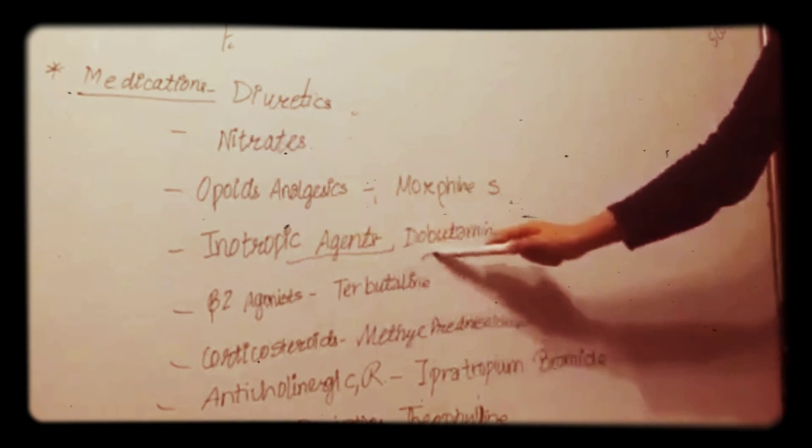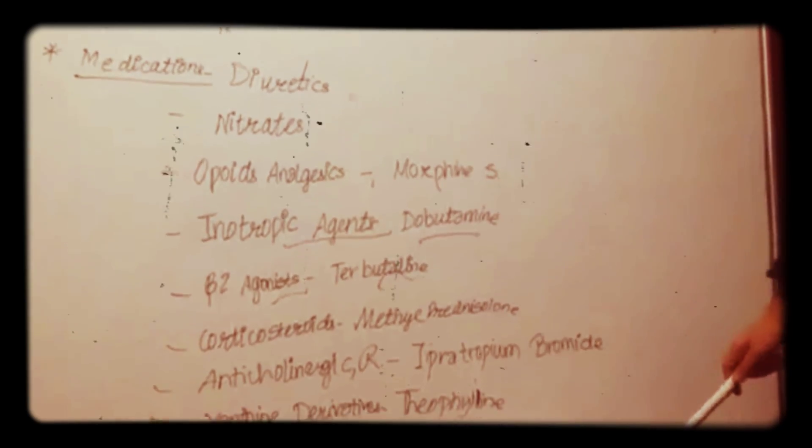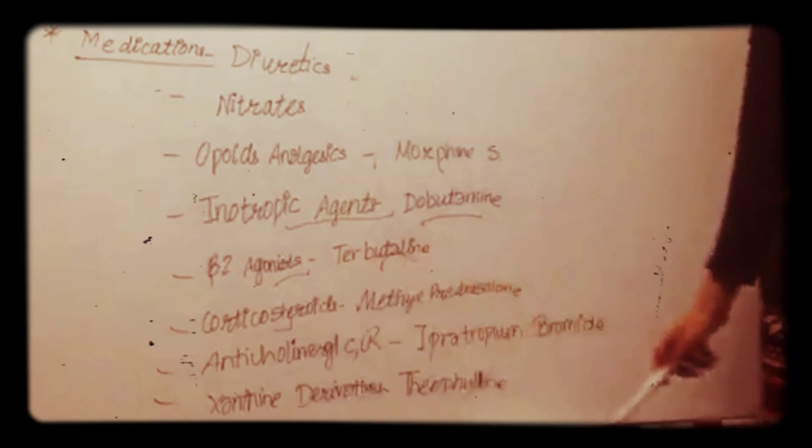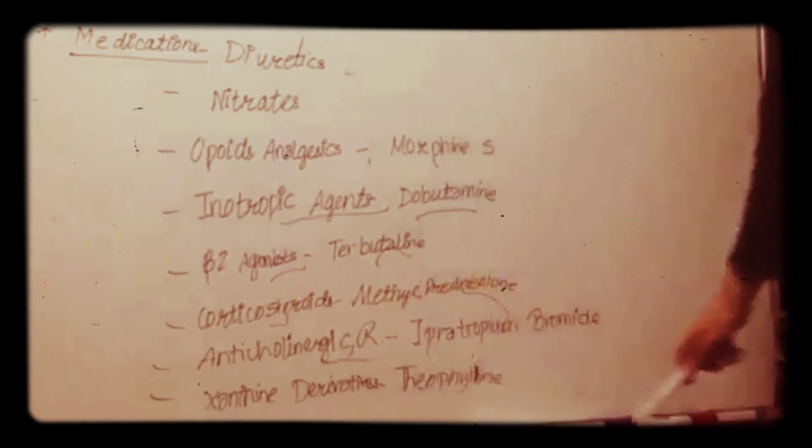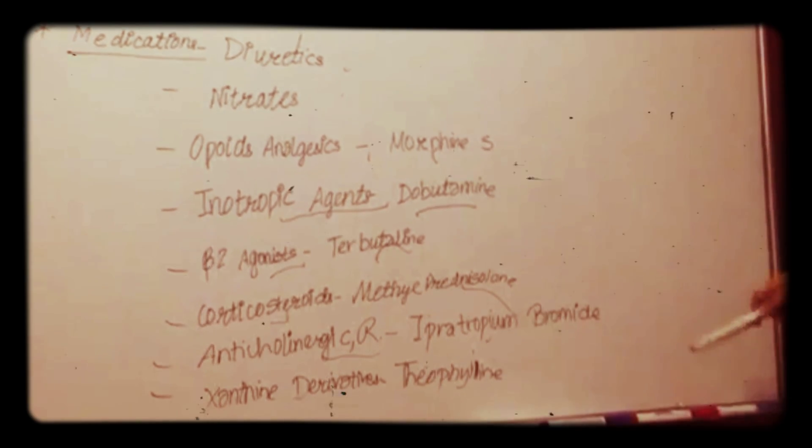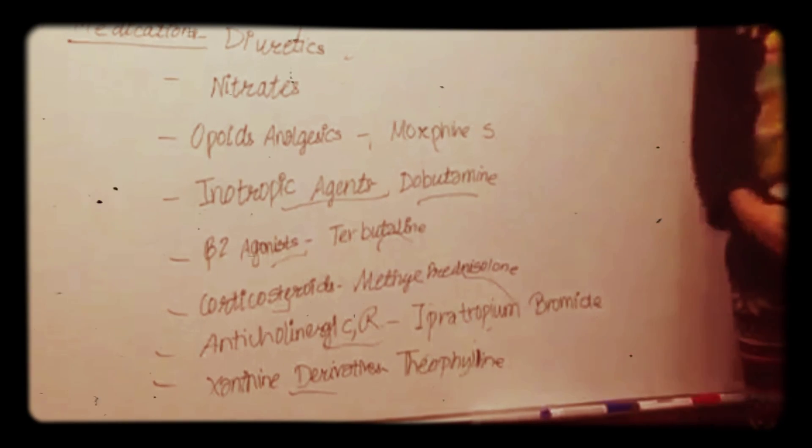Inotropic agents we can give dobutamine, in beta-2 agonist we can give terbutaline, in corticosteroids we can give methylprednisolone, and in anticholinergic respiratory we can give ipratropium bromide, and in xanthine derivatives we can give theophylline. Thank you.